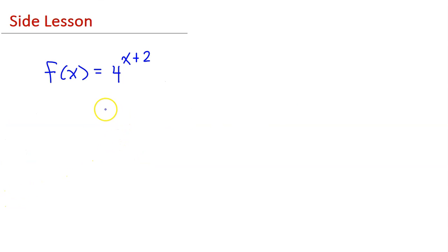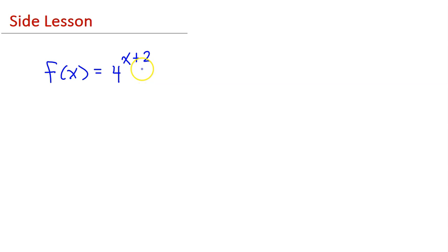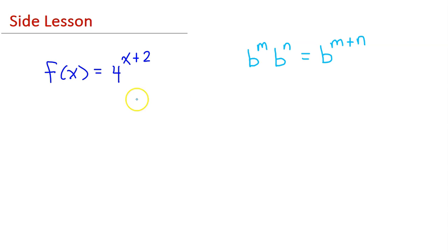Let's do a quick side lesson. We just saw that if f of x equals 4 to the x plus 2, this is a horizontal translation by negative 2. Let's see if we can use the properties of exponents to rewrite this function into an equivalent form.